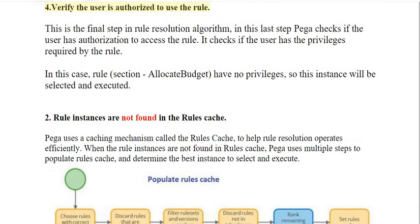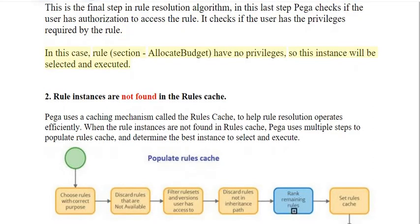Step 4: Verify the user is authorized to use the rule. This is the final step in the rule resolution algorithm. PEGA checks if the user has authorization to access the rule and verifies if the user has the privileges required by the rule. In this case, rule section 'Allocate Budget' has no privileges, so this instance will be selected and executed.